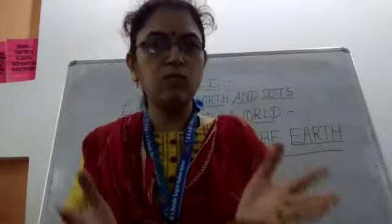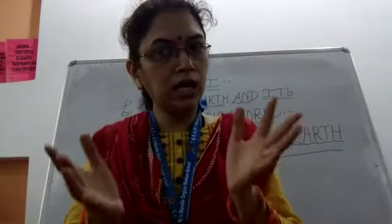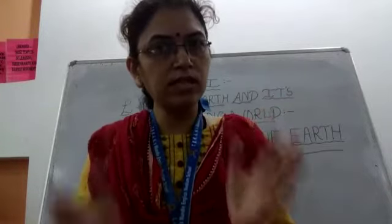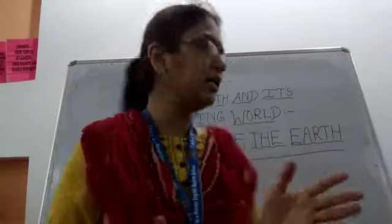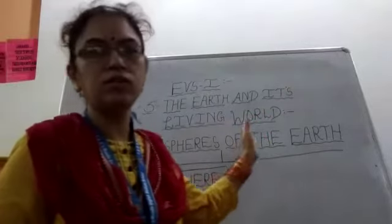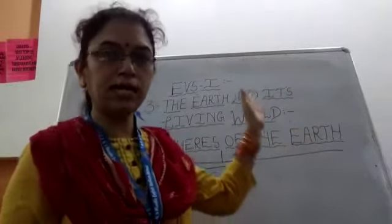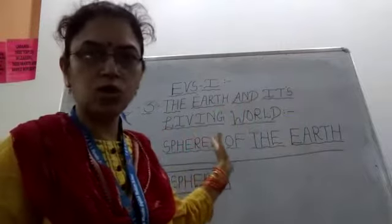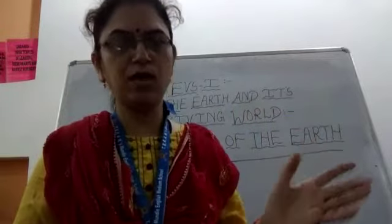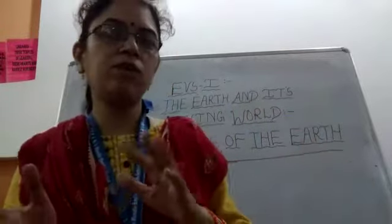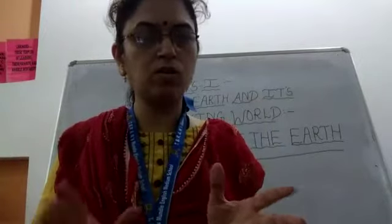And that is what our today's lesson is about — Lesson Number 3: The Earth and Its Living World. So what is the other name for this land, water, and air? The other name for all these important things connected to the Earth is the spheres of the Earth.